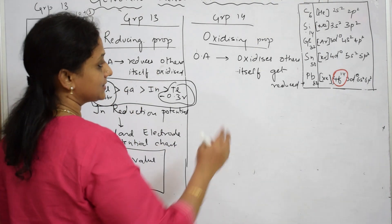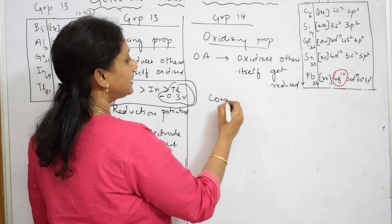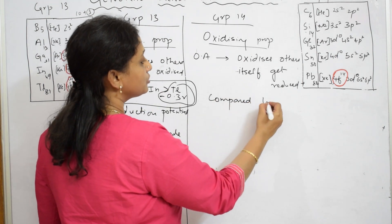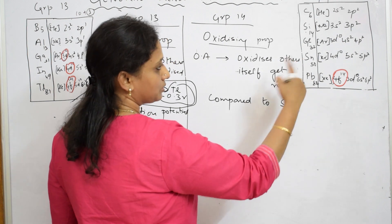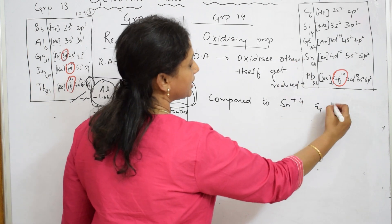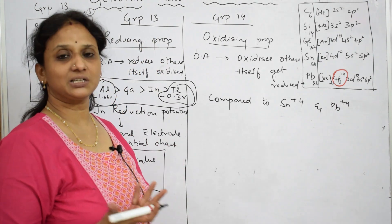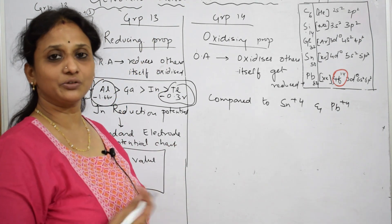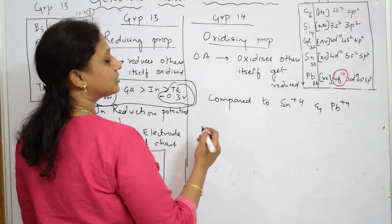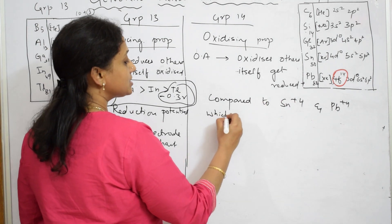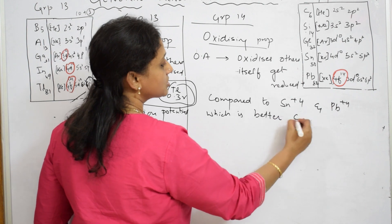Suppose a question is asked: between Sn⁴⁺ and Pb⁴⁺, which is the better oxidizing agent? You might say these don't show +4, but in this question, we compare Sn⁴⁺ and Pb⁴⁺ as oxidizing agents.